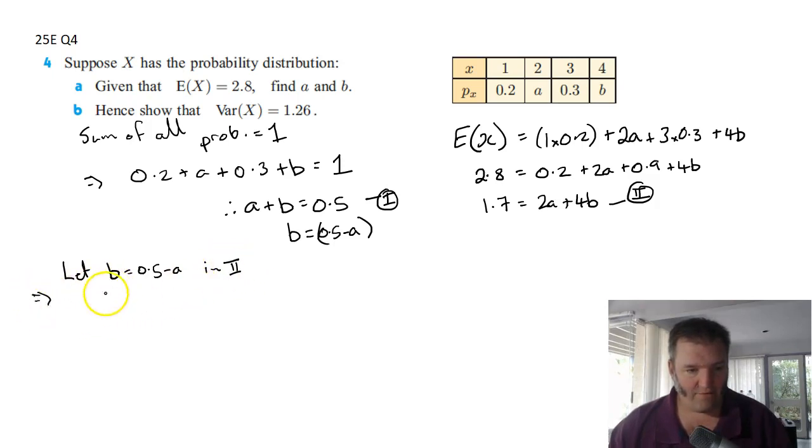So now I've got 1.7 equals 2a plus 4 multiplied by 0.5 minus a. 1.7 equals 2a plus 2 minus 4a. 1.7 equals negative 2a. I said 1.7 but that looks a lot like 1.2. Let's make it look more like 1.7.